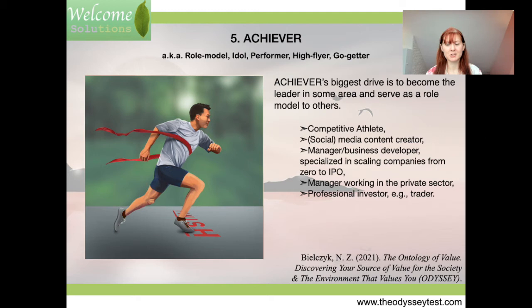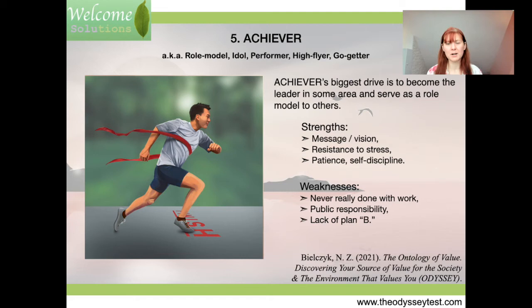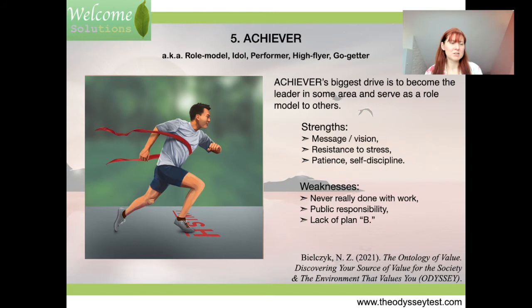Fifth: the Achiever — people born to be role models. Examples include competitive athletes and content creators, but you can find them in every organization. They have a message and a vision; they want to become a role model to convey a specific message. They are resistant to stress, perseverant, and highly disciplined. Weaknesses: it's a risky path — they sometimes lack a plan B, must take public responsibility, and the work never really ends because there's always someone to chase.